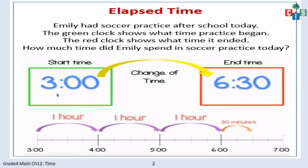From 3 o'clock to 4 o'clock it will be 1 hour. From 4 o'clock to 5 o'clock, again 1 hour. From 5 o'clock to 6 o'clock, again 1 hour. And from 6 o'clock to 6:30 it will be only 30 minutes. So in all, she had practice for 1 hour, then 1 hour, then again 1 hour, then 30 minutes — that is 3 hours and 30 minutes. So Imli spent 3 hours 30 minutes in soccer practice today.